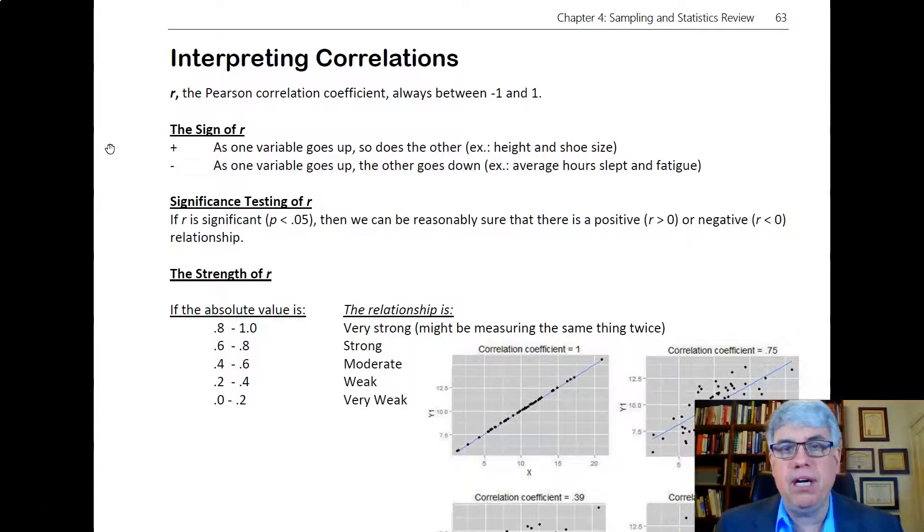A negative correlation means as one variable goes up, the other goes down. For example, the average hours slept each night and fatigue. If you're only sleeping six hours a night, your fatigue level is probably pretty high compared to people who are sleeping seven or eight hours a night.